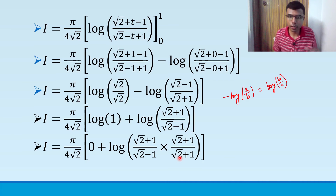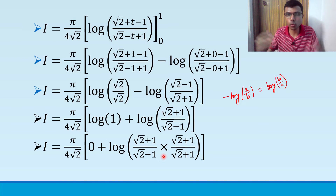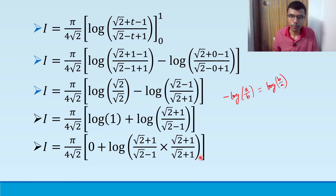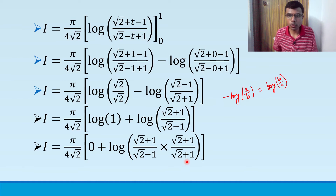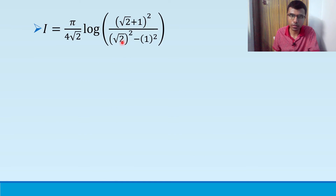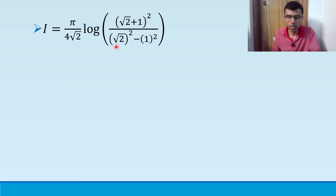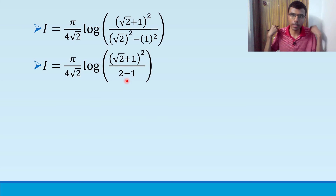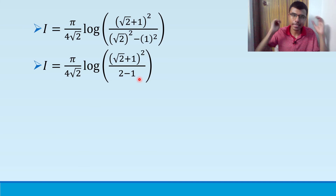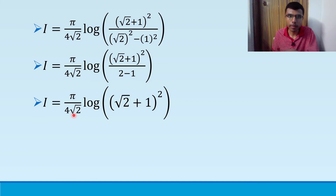To rationalize: multiply and divide by (√2 + 1). The numerator becomes (√2 + 1)², and the denominator (√2 − 1)(√2 + 1) = (√2)² − 1² = 2 − 1 = 1. So we have log(√2 + 1)². Applying the logarithm power property log(aᵐ) = m·log a, the 2 comes out as a coefficient: 2·log(√2 + 1). Combined with π/(4√2), the 2s cancel giving π/(2√2) · log(√2 + 1).